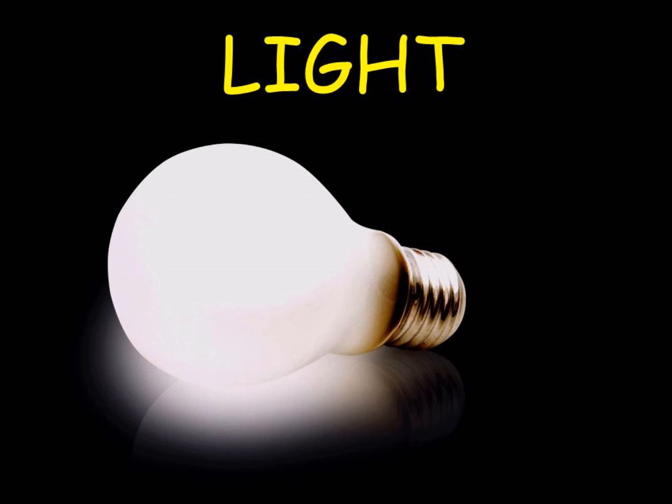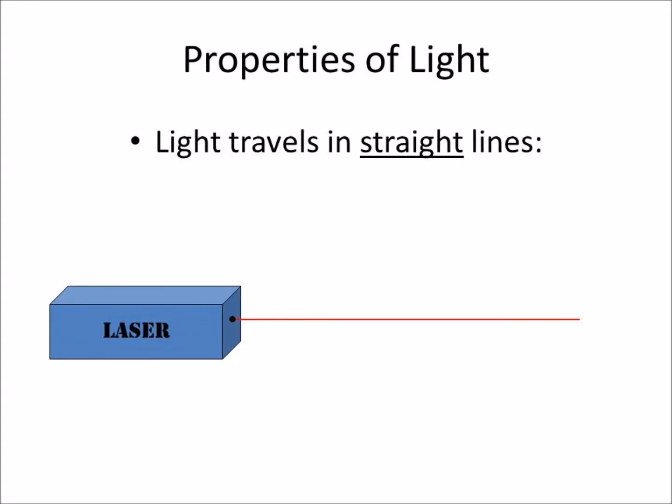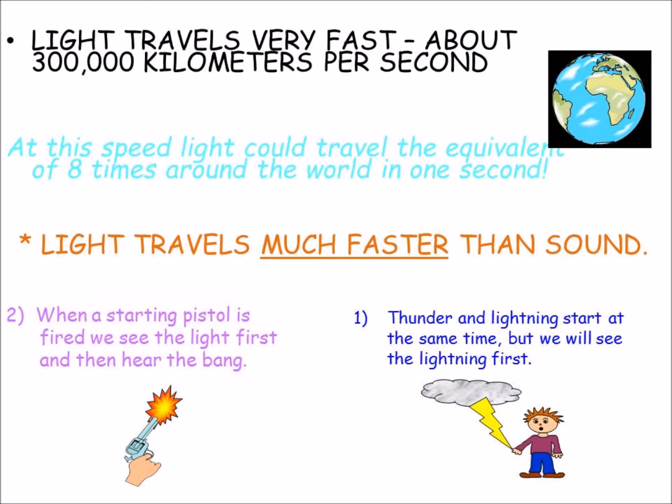Let's study some characteristics or properties of light. Property number one: light travels in straight lines. Property number two: light travels very, very fast — around 300,000 kilometers per second. At this speed, light could travel the equivalent of eight times around the world in one second.